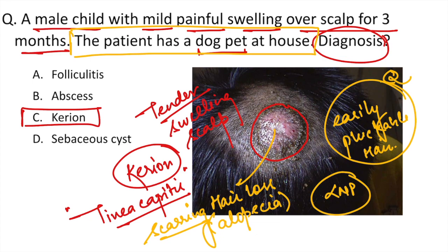You might be wondering why the question mentions that the patient has a dog as a pet. From microbiology, dermatophytes can be divided into three types: geophilic, zoophilic, and anthropophilic. Anthropophilic transmission — man to man — causes non-inflammatory tinea, while zoophilic and geophilic types cause inflammatory tinea infection. Kerion is an inflammatory type, transmitted from animal to man — in this case, dog to person.